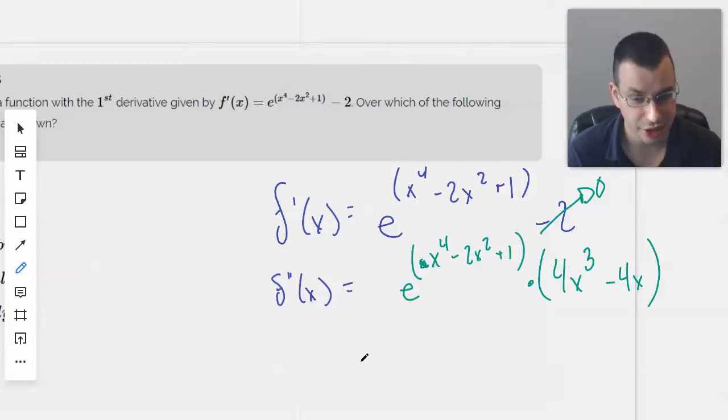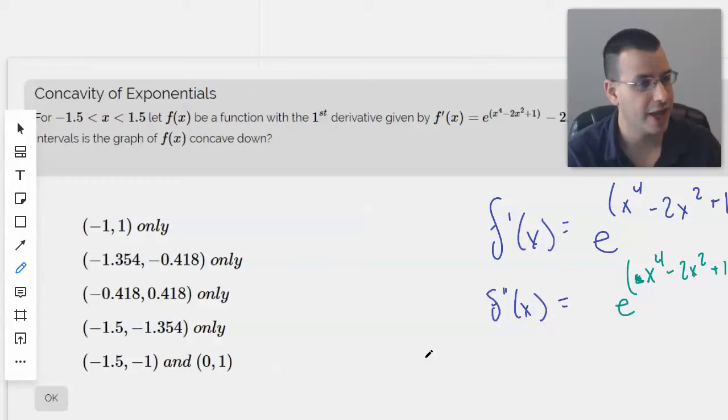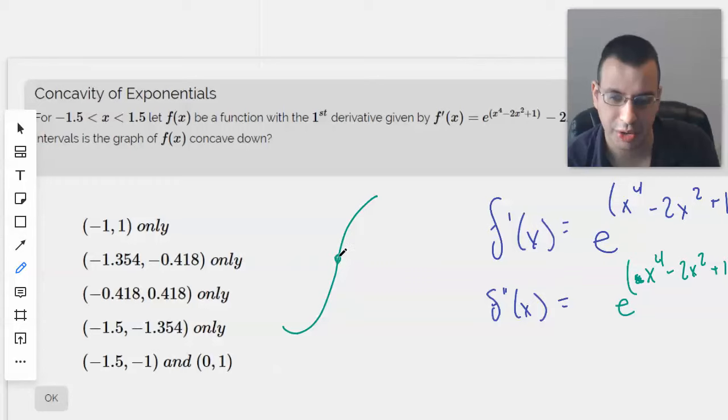We're going to set the second derivative equal to 0, which gives us inflection points. Inflection points are like max and minimums but for concavity. We want to find where the concavity changes, then find which areas of that concavity are positive or negative.